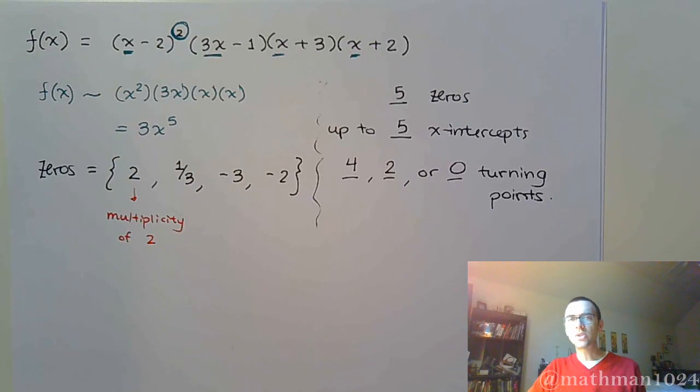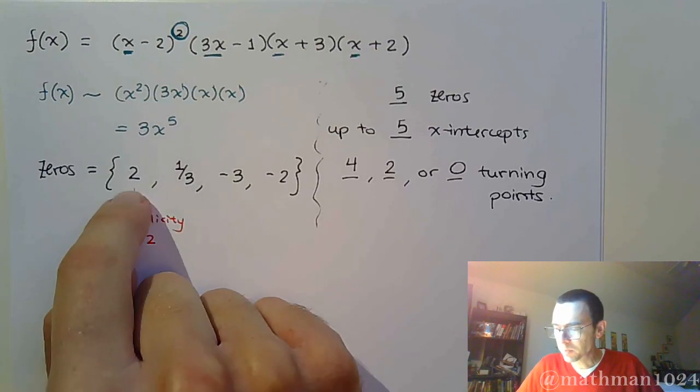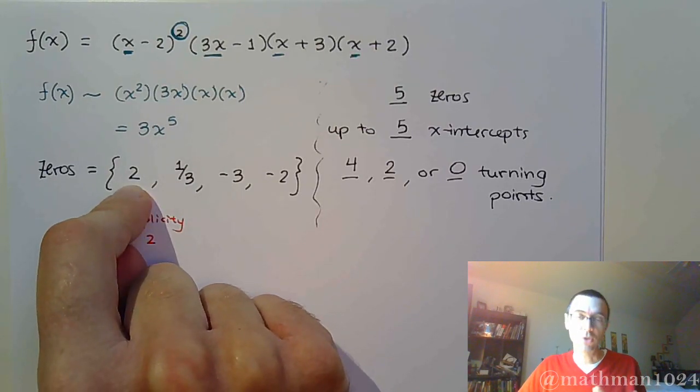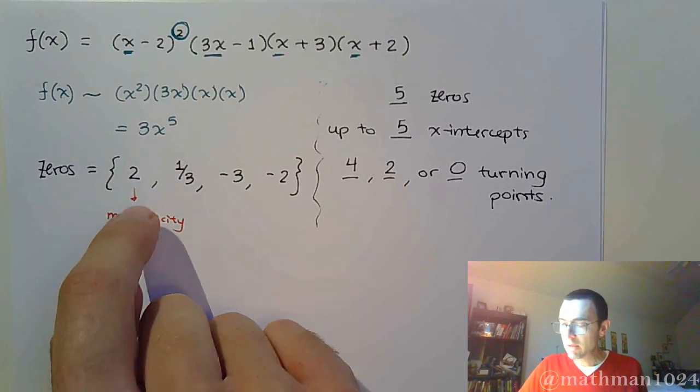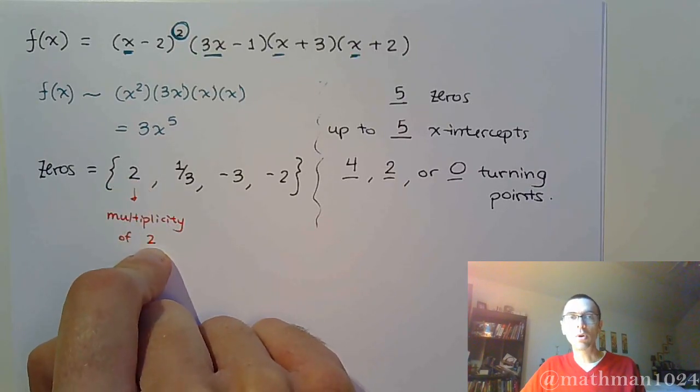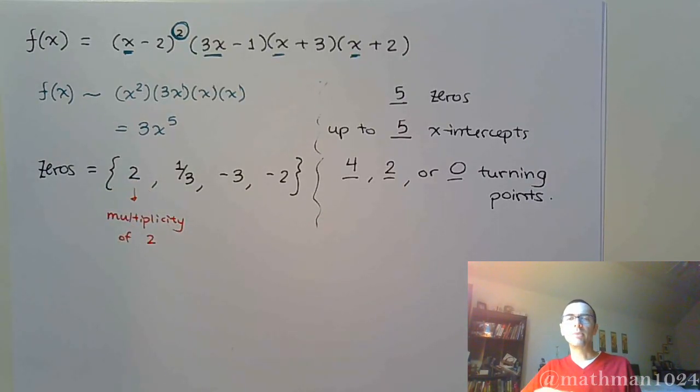So we don't necessarily know how many turning points we have, but the more zeros you have, the more turning points you're going to have. If you end up having a zero, I should say the more distinct zeros you have, the more turning points you're going to have. If this guy had been a multiplicity of say 4, that really starts to eliminate how many turning points you can have.